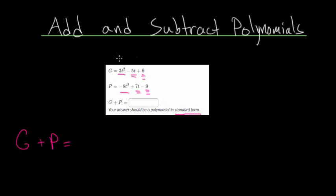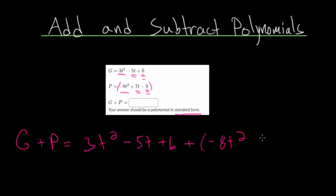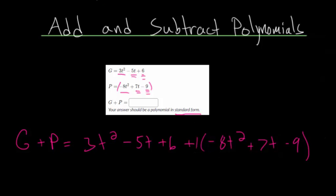When I have g plus p, we have the polynomial g: 3t squared minus 5t plus 6, and then we're going to add this entire polynomial p to it. With these problems, you want to be careful, because technically since we're adding the entire polynomial, we're substituting p for this entire expression. So you would really need to put it in parentheses: minus 8t squared plus 7t minus 9. Since we're doing addition, you're effectively distributing positive 1 to all three of these, so the parentheses don't really matter.